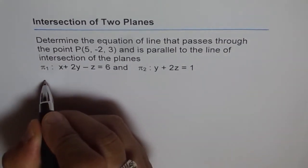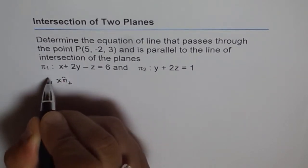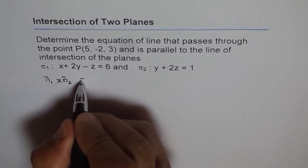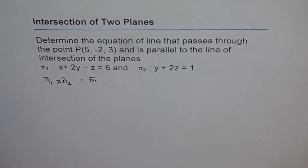So what we are trying to do is n1 cross n2. Because that will give us the direction vector of the line which let me write as m.